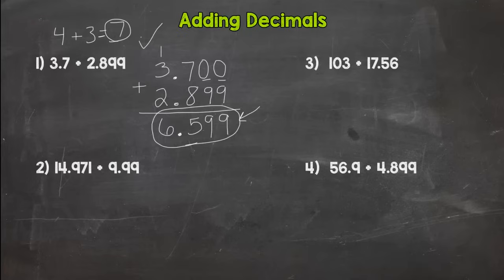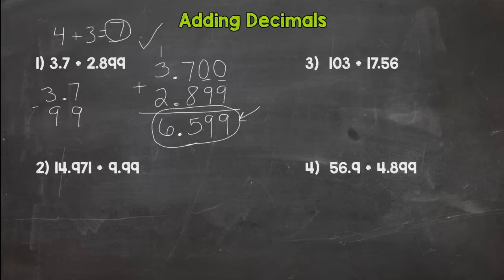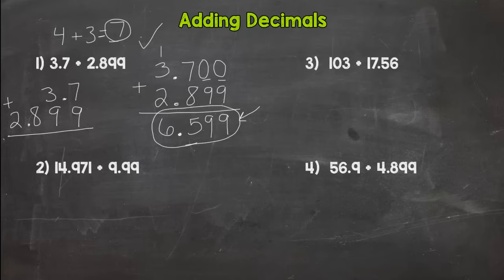So to recap: line up your decimals, use placeholder zeros, bring your decimals straight down, and just add. I'm going to show you one of the main mistakes over here. This is not how you do it — just lining up your numbers without aligning the decimal points means your places aren't lined up and your decimals aren't lined up. If you do that, you have no chance of getting the correct answer.